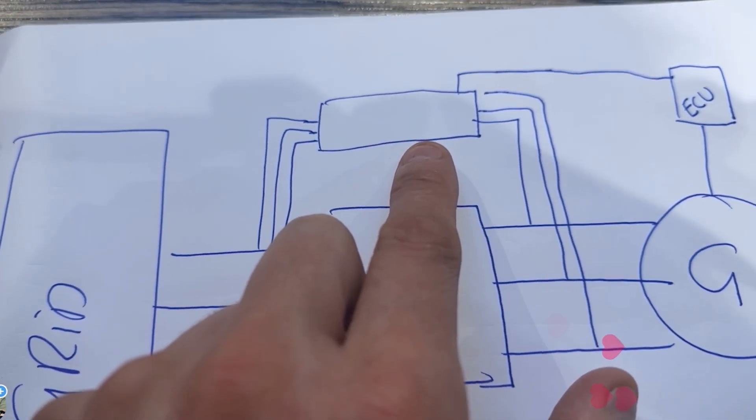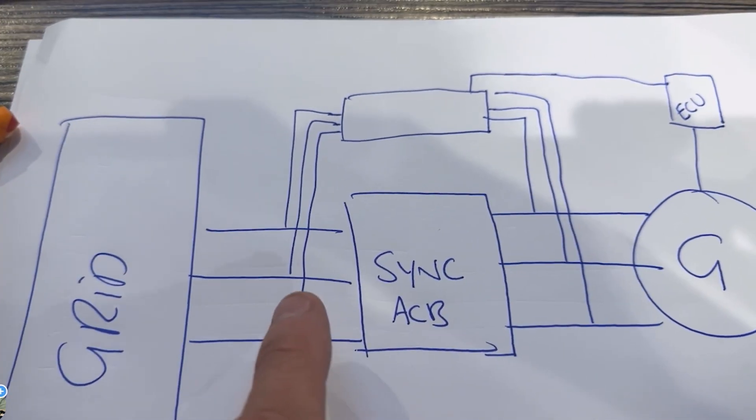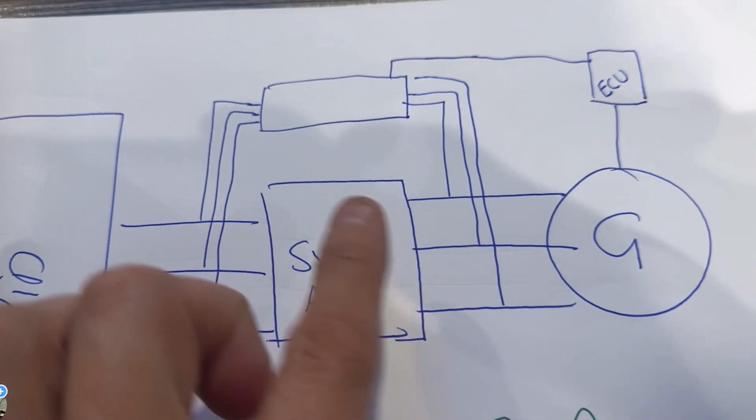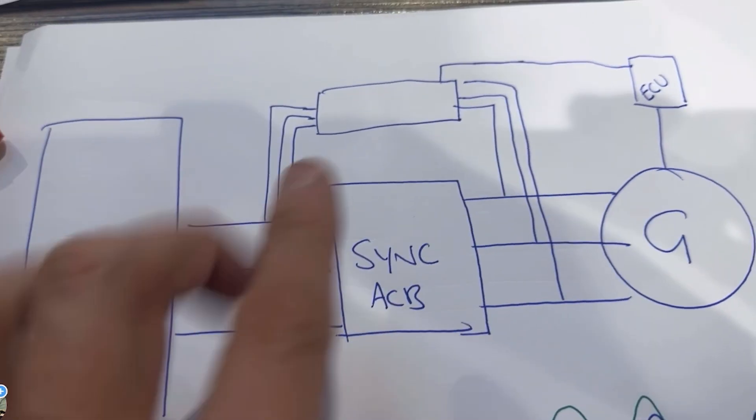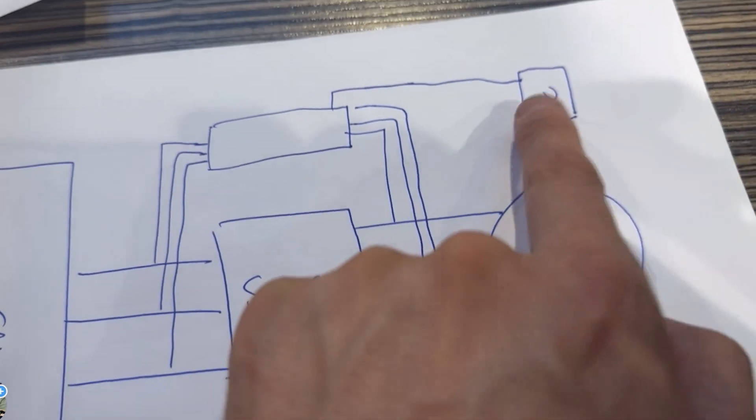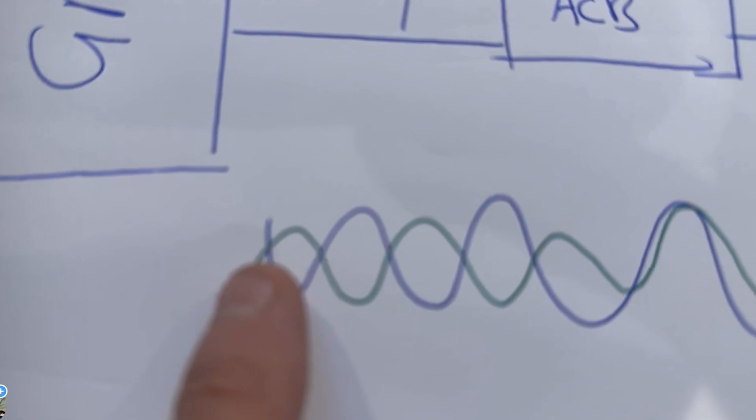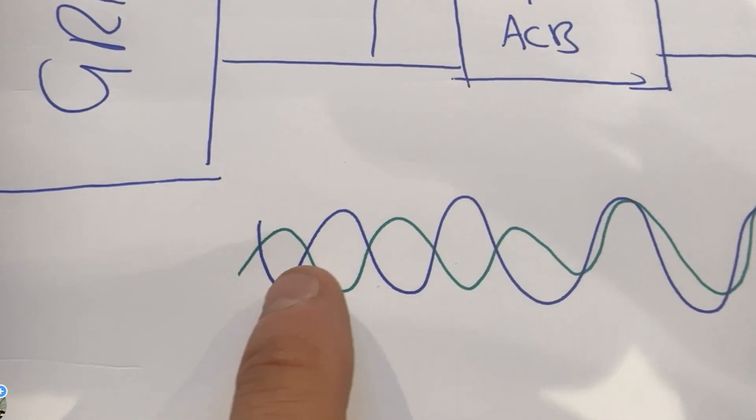With this ACB, let me draw that, the sync breaker needs to synchronize the generator to the grid, but the sync breaker is just a switch. So the synchronization controller is capable of measuring each side's voltage, current, all that bollocks. It makes sure it's going the right way, is it okay, yes it is.